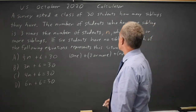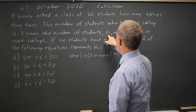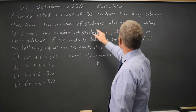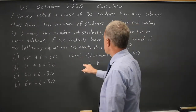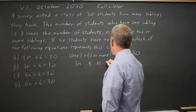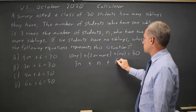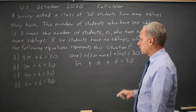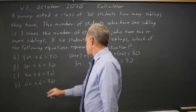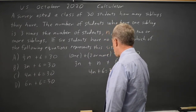The number n who have two or more siblings — this is n. The number of students who have one sibling is three times that, so that would be 3n. And the number of students who have no siblings is six. Grouping the n terms: 3n plus n is 4n, plus 6 equals 30.